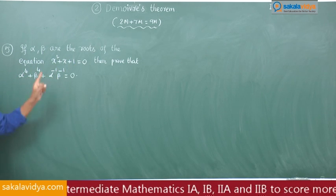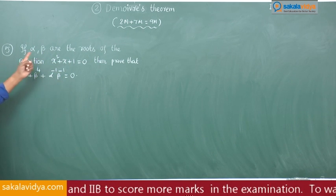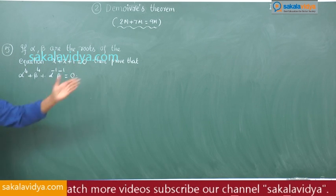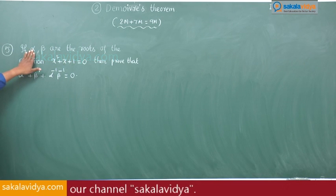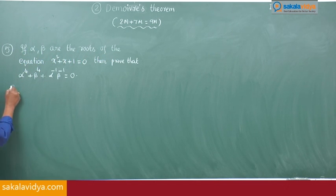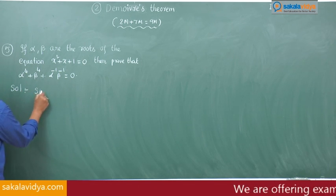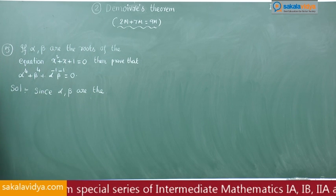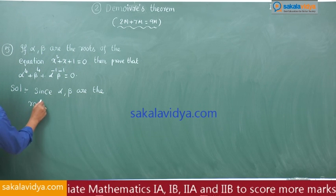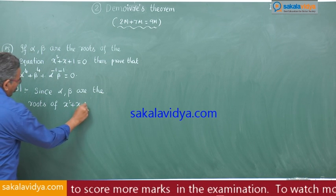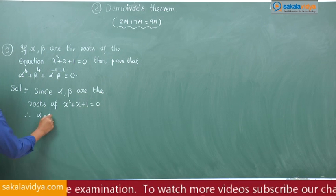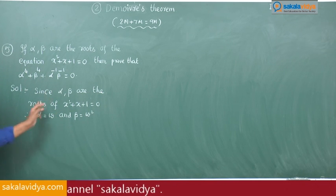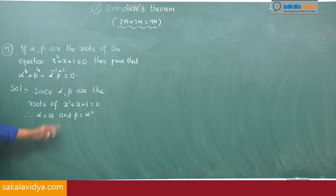Observing the quadratic equation x² + x + 1 = 0, the roots are complex. If we put omega, then omega squared plus omega plus 1 equals 0, meaning omega satisfies this equation, and so does omega squared. Therefore, since alpha and beta are roots of x² + x + 1 = 0, alpha equals omega and beta equals omega squared. They need not be in the same order — the roots are omega and omega squared.